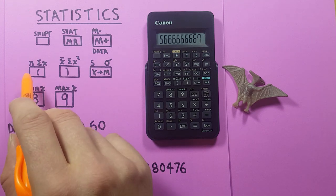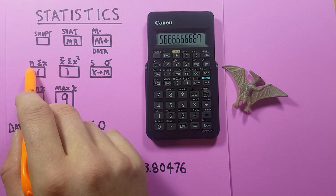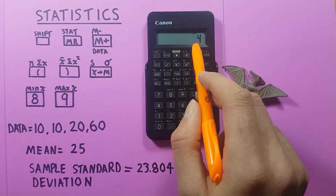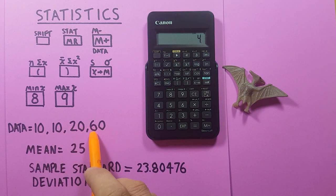We can also confirm the number of items in our data set with this open bracket and the N above it, right here. Press that. There's four, which we know is the correct number of items in our data set.